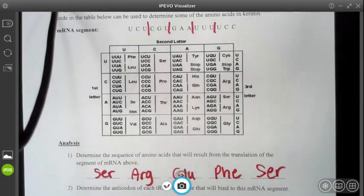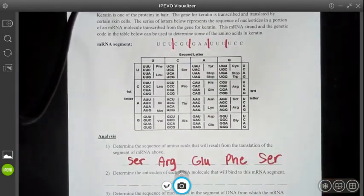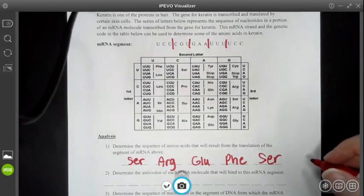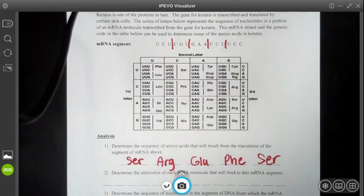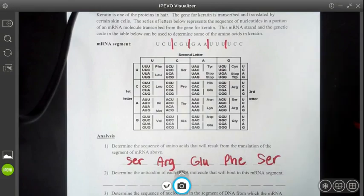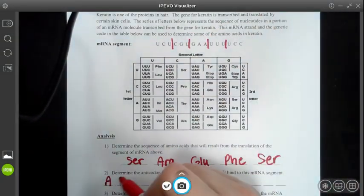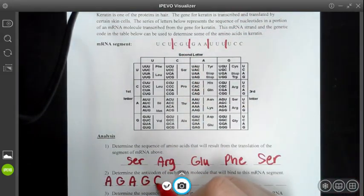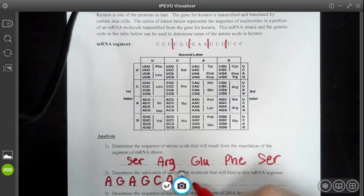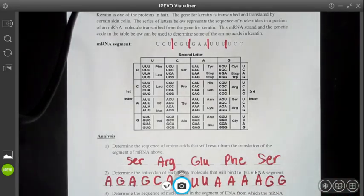Now the next part is to determine the anticodon for each tRNA molecule that will bind to this mRNA segment. tRNA is complementary to mRNA. So complementary means you do A with U or G with C. So I'm going to use this top mRNA segment. So U is going to go with A, C, G, U, A, G, C, A, C, U, U, A, A, A, A, G, G. That's how you do number two.